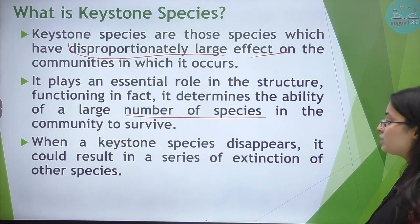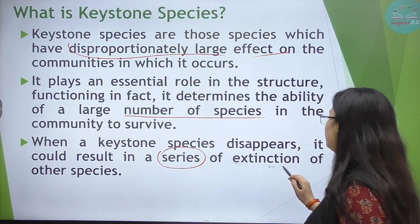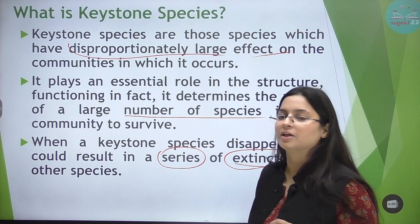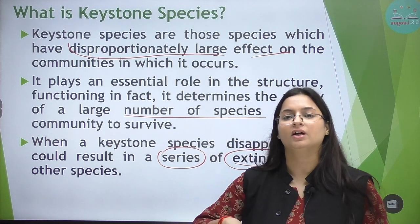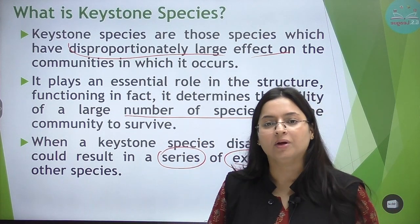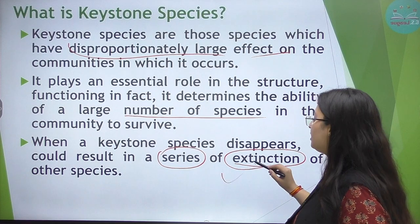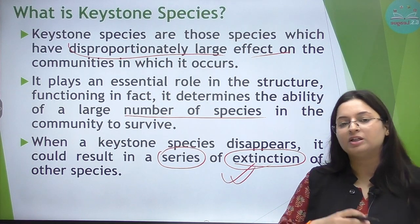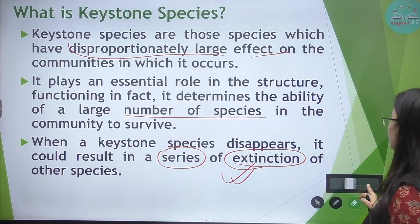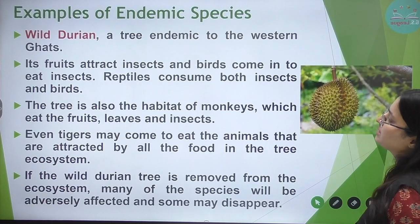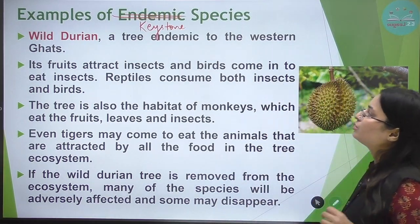When a keystone species disappears, it could result in a series of extinctions. If a keystone species disappears from any community, it would affect a large extent of species in that community.